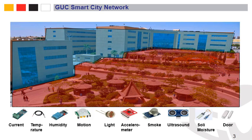Our project can support different use cases with various sensor types: current sensors for energy profiling, temperature and humidity sensors for environmental monitoring, motion sensors for activity detection, light sensors for automatic lighting control, accelerometers for mobility or asset monitoring, smoke detectors for security alerts, and ultrasound sensors for asset identification and monitoring.